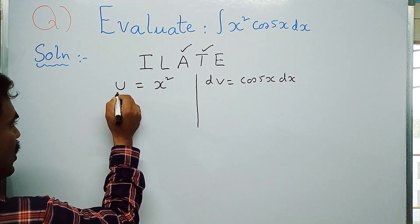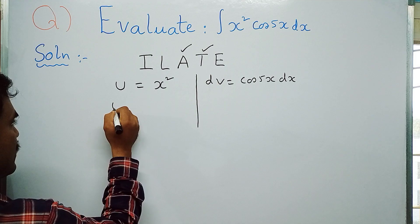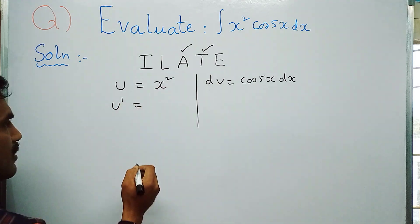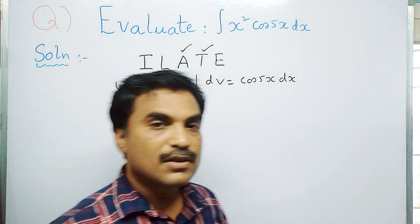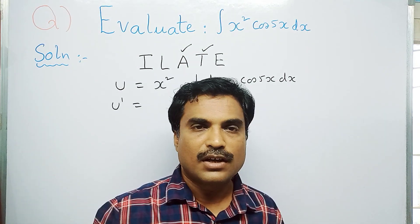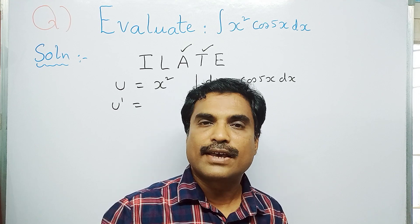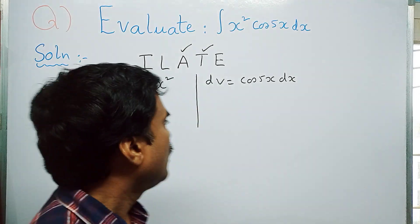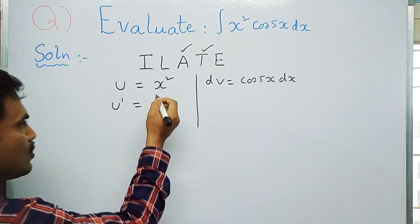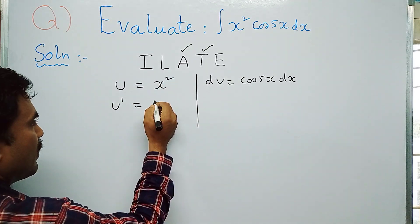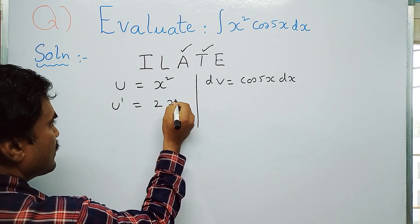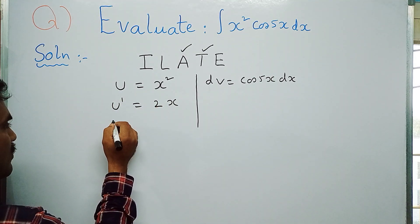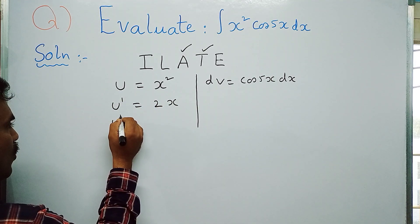Differentiating both sides: u′ = d/dx(x²). Applying the formula d/dx(x^n) = n·x^(n−1) with n = 2, we get u′ = 2x. Differentiating again gives u″.